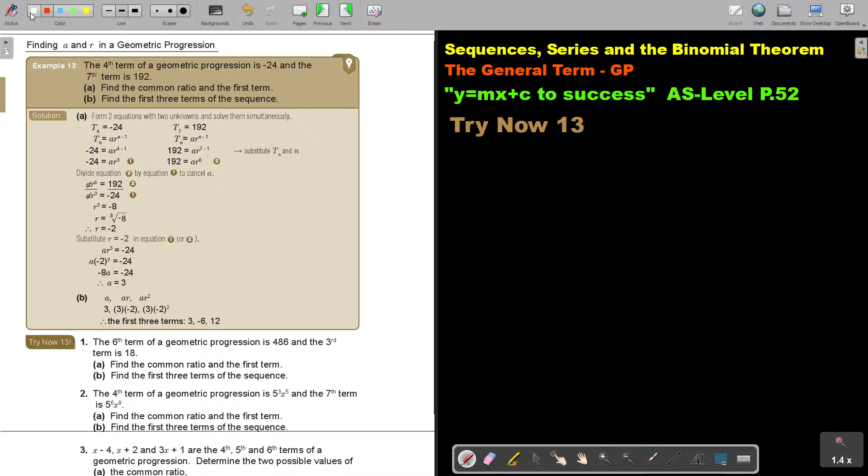Let's start with number one. Now, the sixth term of a geometrical progression is, now I like starting by saying T6 equals 486, and the third term is 18. And then, don't forget, it's a GP. And what is the general rule? Make sure you memorize this formula.